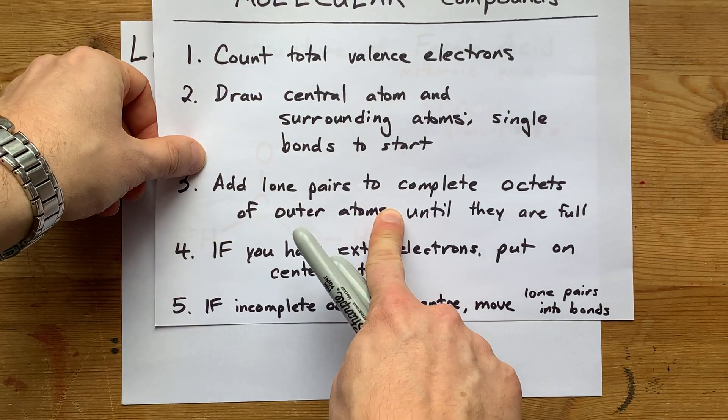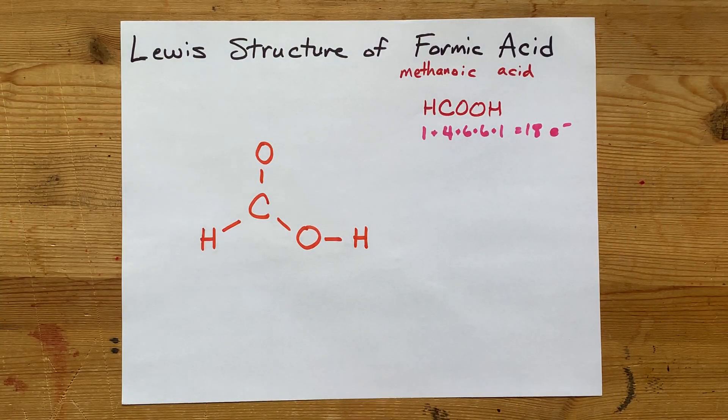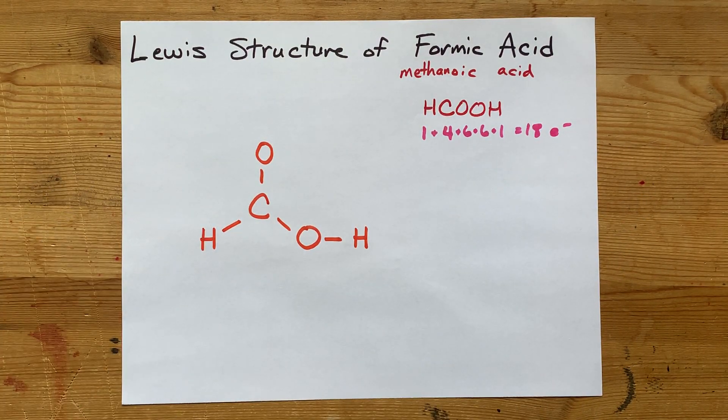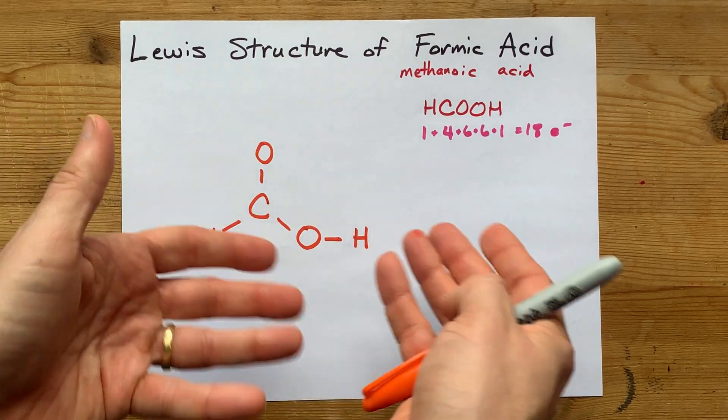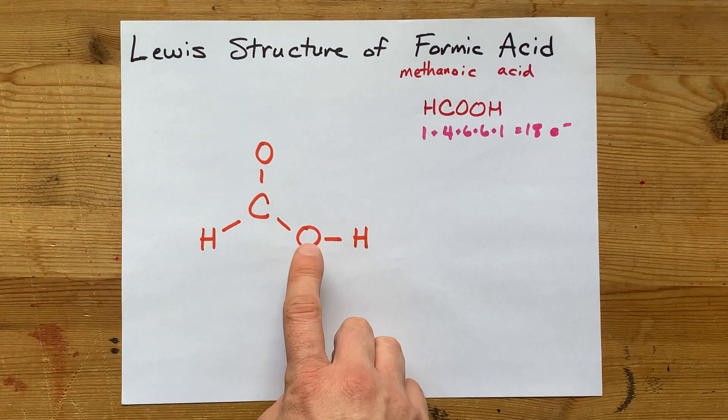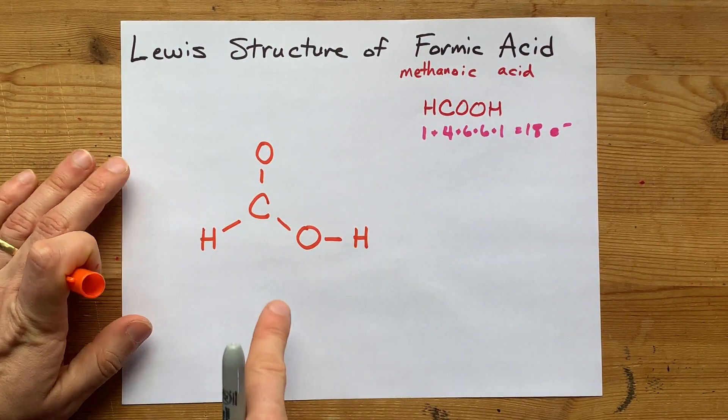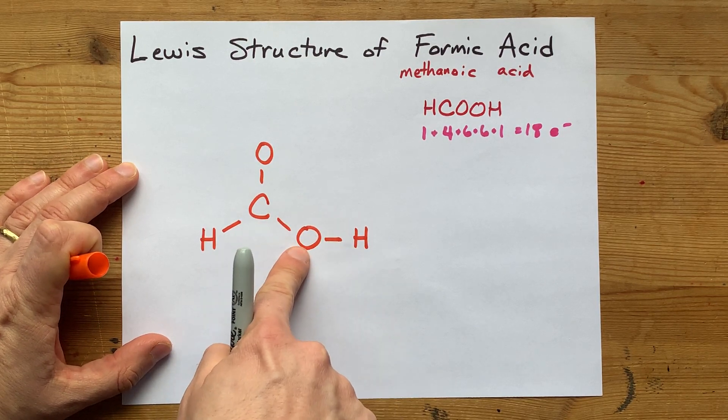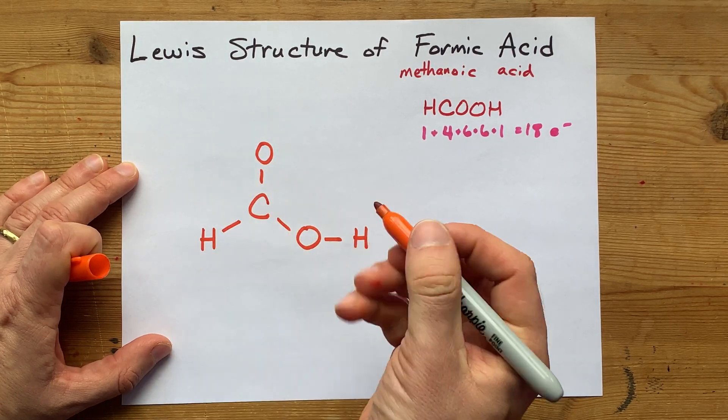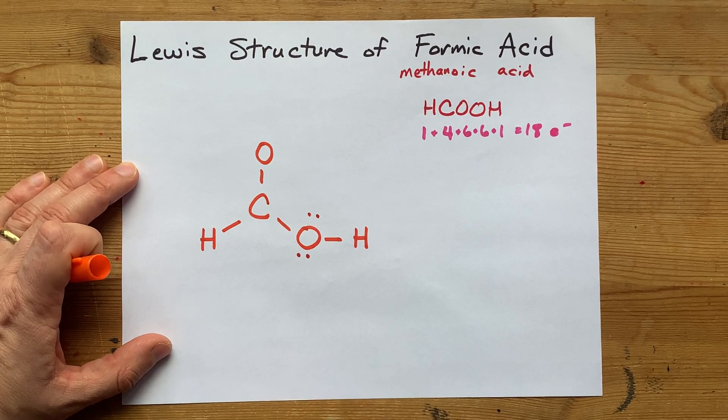I'm going to add lone pairs to complete the octets of my outer atoms until they are full. Now, I can't go past 18 electrons, so let's just keep that in mind. And hydrogen doesn't obey the octet rule. It's happy with a single bond, and it's done. But the oxygens do obey the octet rule, so I've got to complete those octets. I already have two bonds to this oxygen here, so that's already four electrons. And I had put down eight, so I got nine, ten, eleven, twelve.